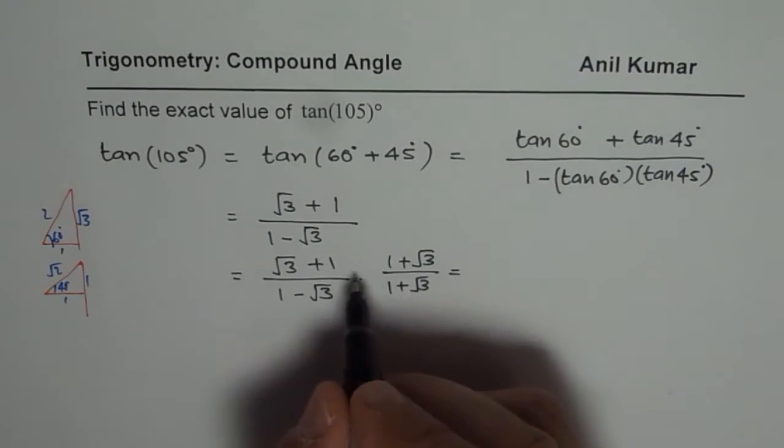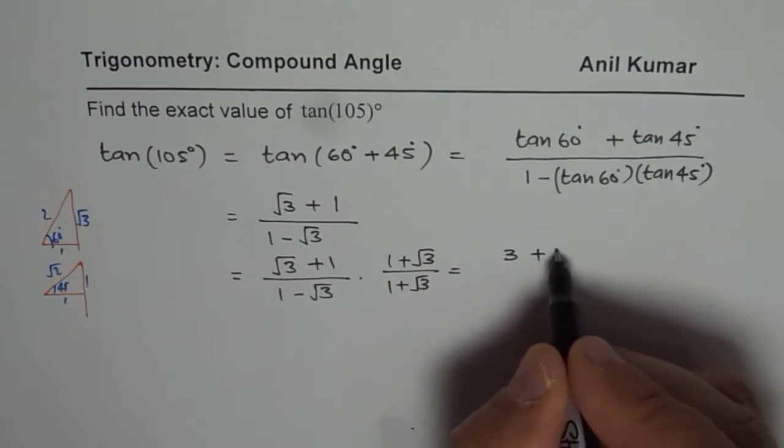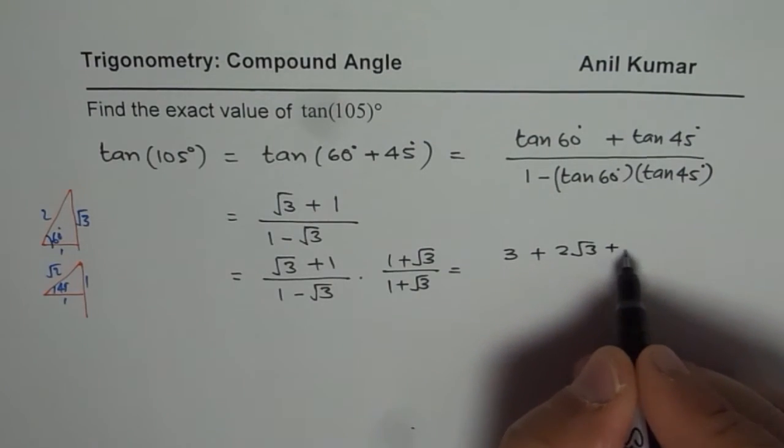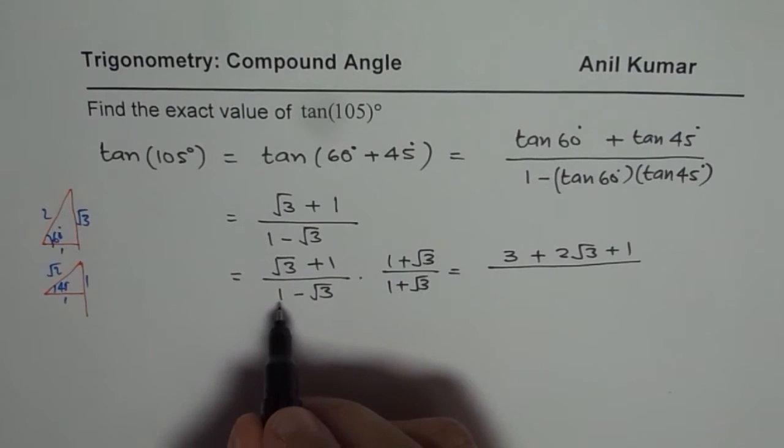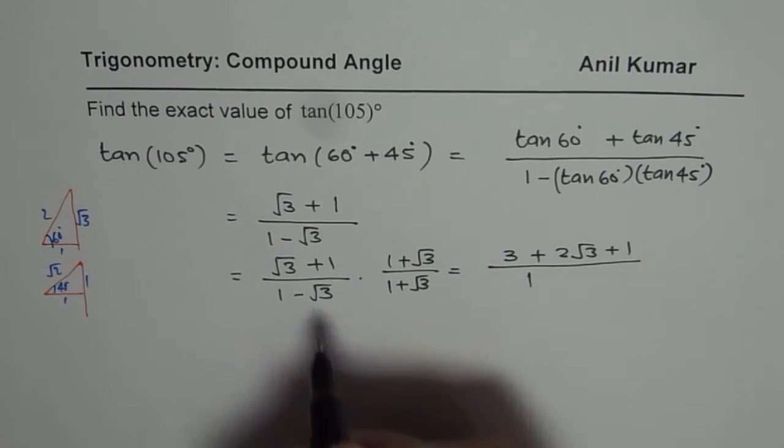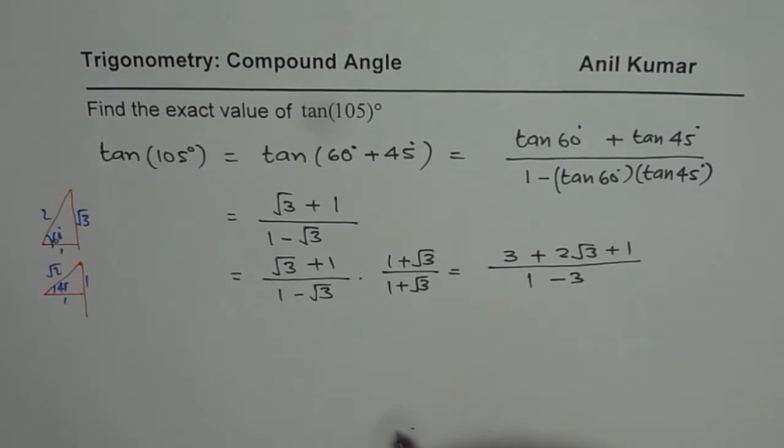It is like a plus b whole square, so we get square root 3 square, which is 3, plus 2ab, that is 2 square root 3 plus 1 square root square of 1. Denominator will be 1 square minus square root of square root 3, which is 3. So that is what you get in the denominator.